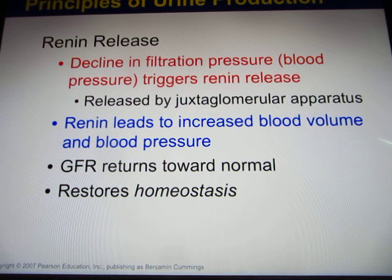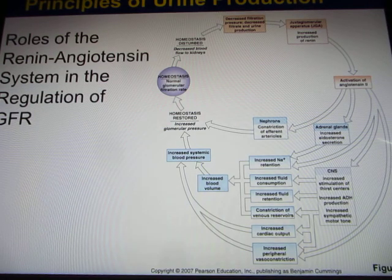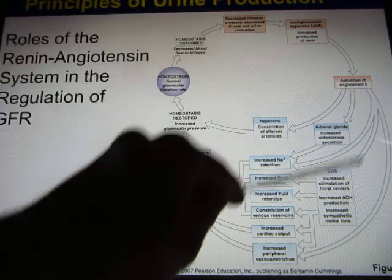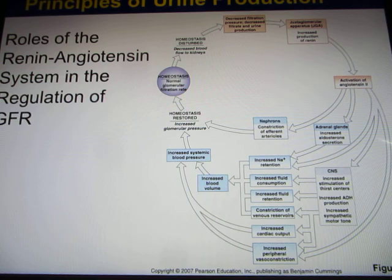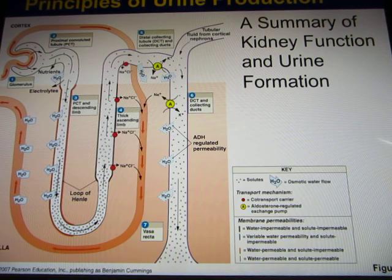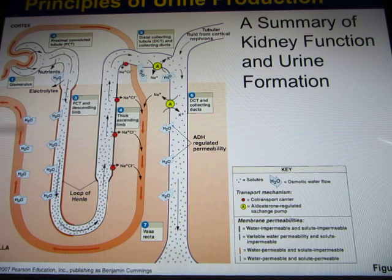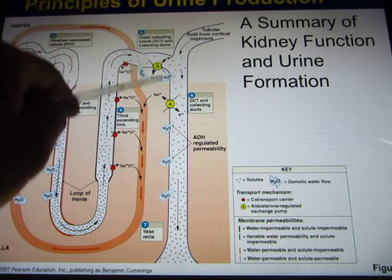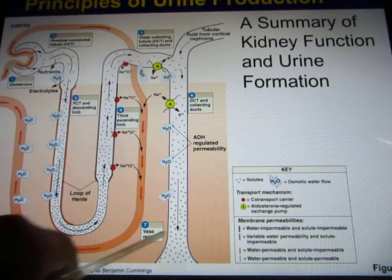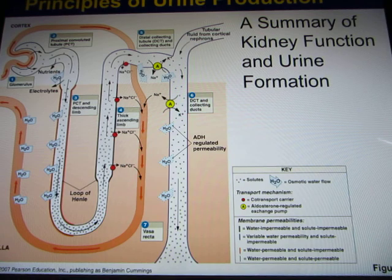Blood pressure is part of homeostasis — you want your blood pressure to be normal, not too high and not too low. The RAS pathway eventually maintains your blood pressure. This is a summary of your kidney's function: we spent a lot of time on the nephron because it is the functional unit of your kidney. It performs filtration, reabsorption, and sometimes secretion, and eventually the fluid becomes urine and exits your body.